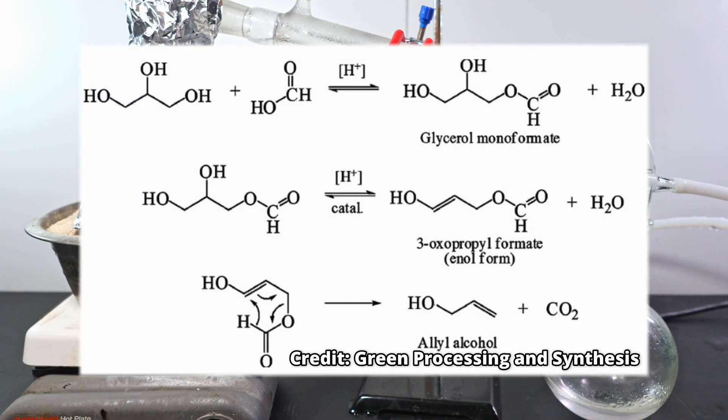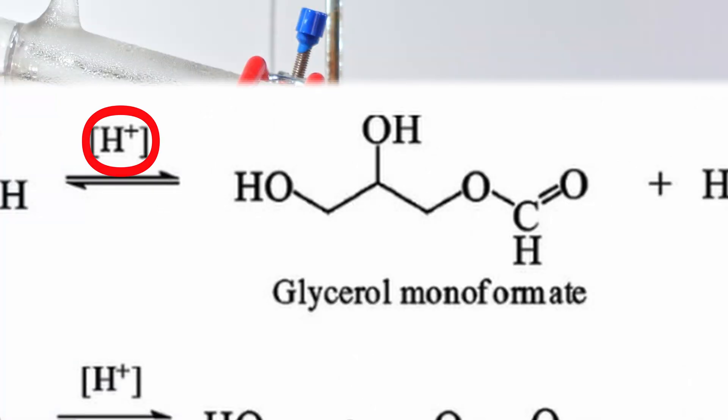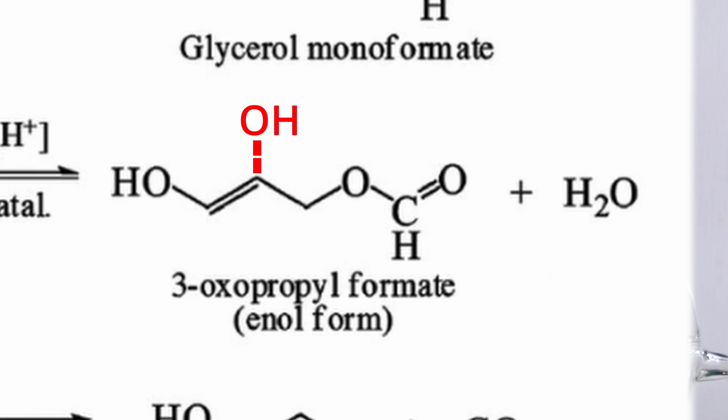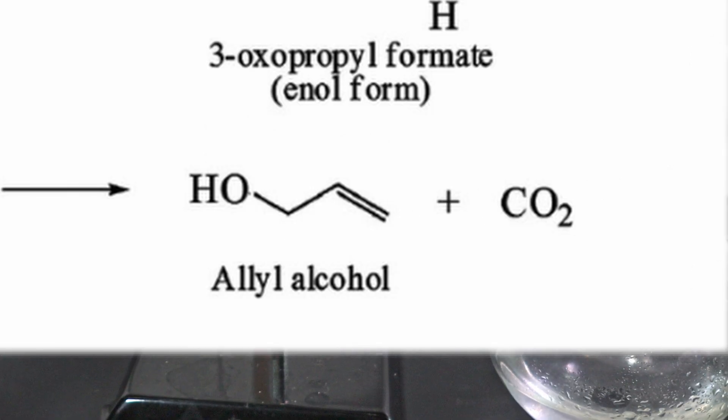The mechanism is pretty straightforward. First, formic acid condenses with the less hindered part of glycerol using its high acidity as a catalyst. A combination of heat and a proton from another formic acid molecule removes the secondary OH, forming a brief but stable enol. In the presence of 200 plus degree heat, both an allylic and hydride shift occur within the concerted mechanism. Carbon dioxide leaves as a gas, and allyl alcohol is quickly vaporized.